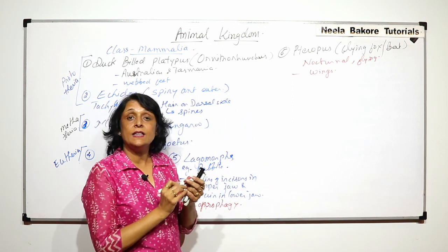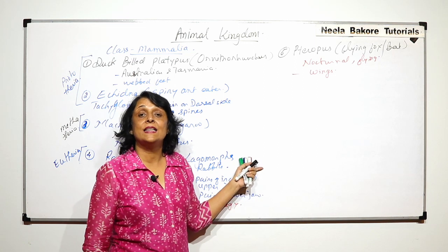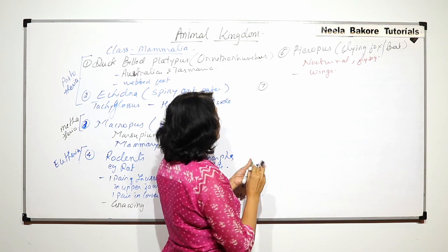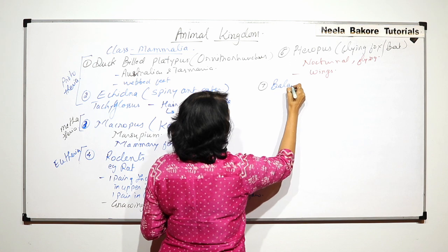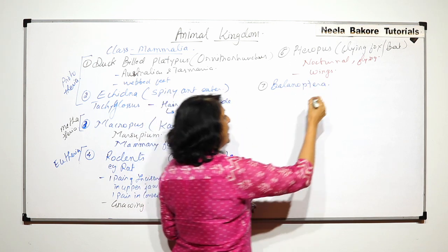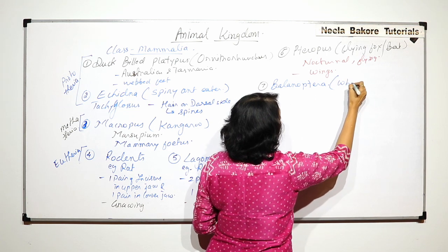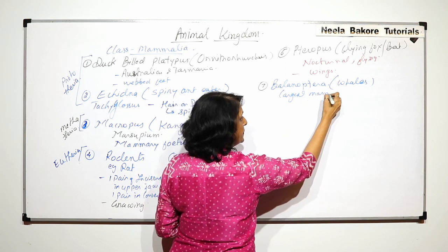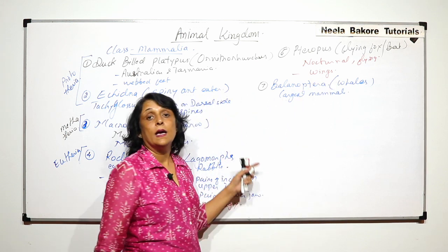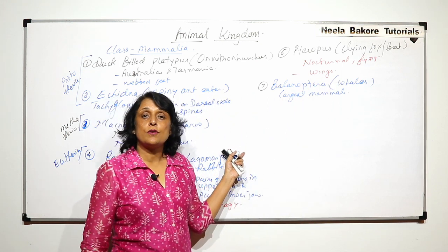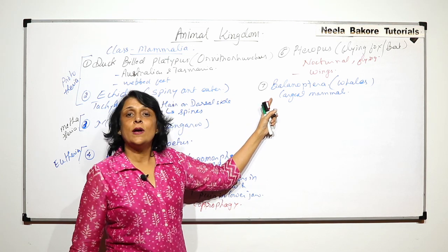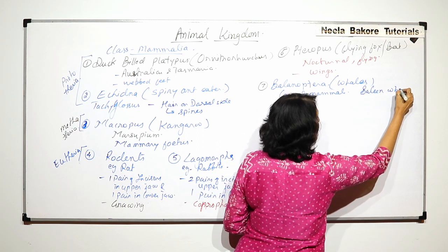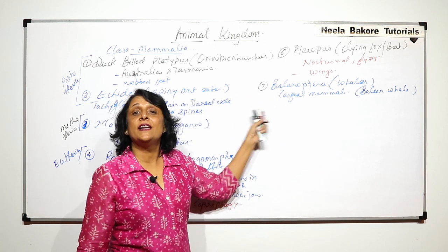The next is Bellinoptera. Bellinoptera group includes whales. Whales are the largest mammals. They show all the characteristic features of mammals. There is one special thing, like one common whale which is called baleen whale. This is the common one. They are filter feeders.